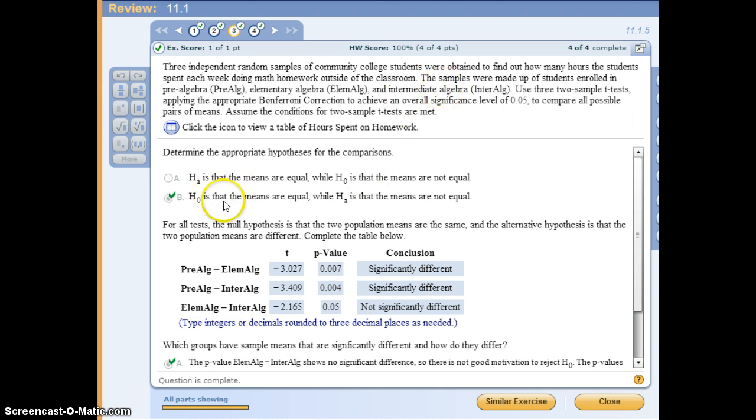For the null hypothesis, we state that the means are equal, and the alternative is that the means are not equal. People ask, what test is this? It's given to you here. We run a two-sample t-test, and we compare two sample sizes.